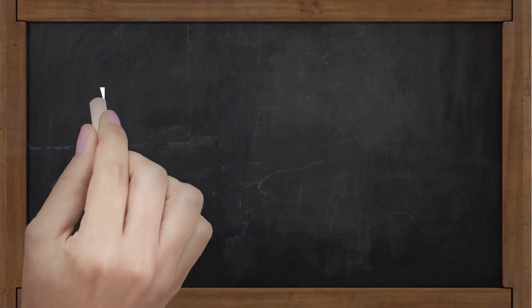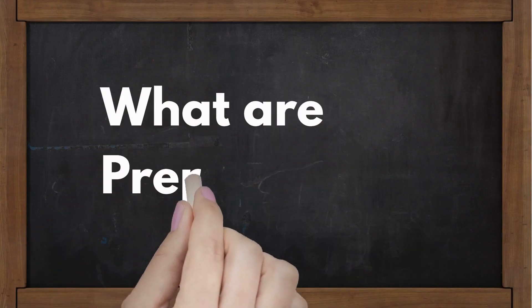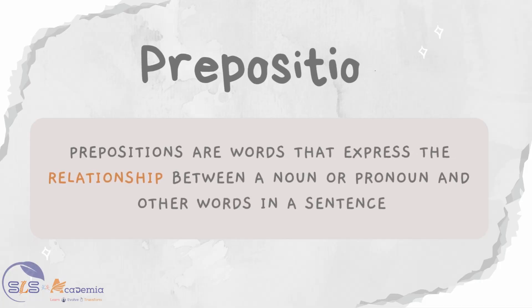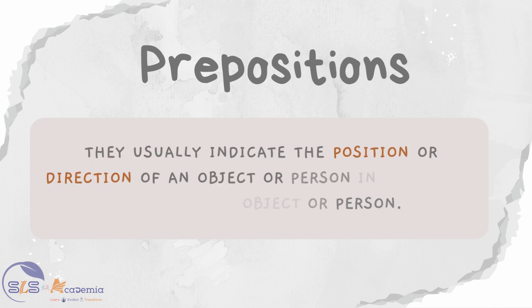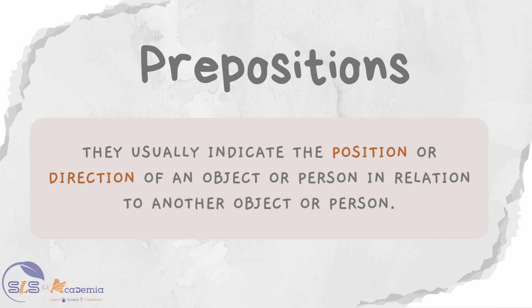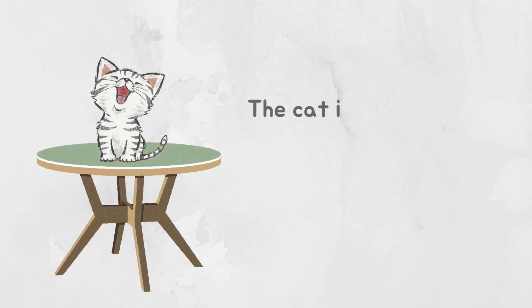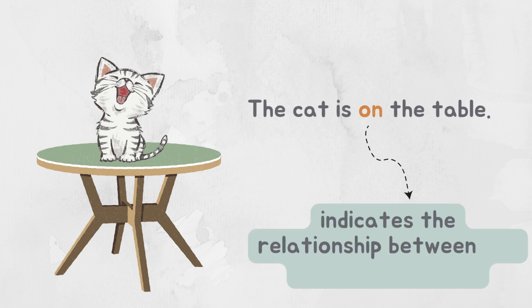First of all, let us understand what prepositions are. Prepositions are the words that express the relationship between a noun or pronoun and other words in a sentence. They usually indicate the position or direction of an object or person in relation to another object or person. For example, in the sentence 'the cat is on the table,' the preposition 'on' indicates the relationship between the cat and the table — specifically that the cat is located on top of the table.